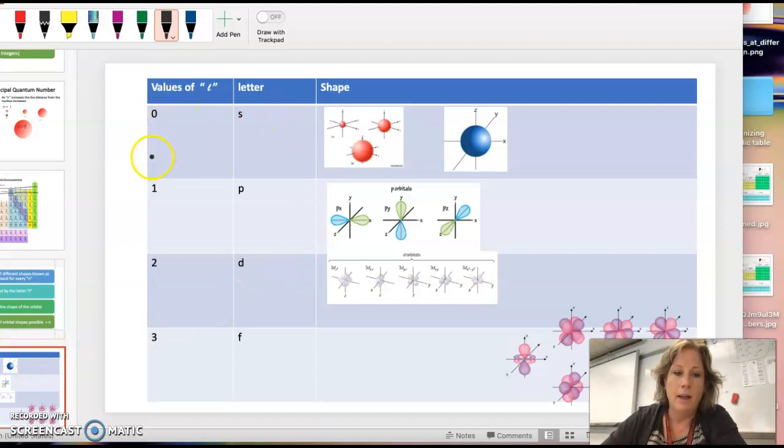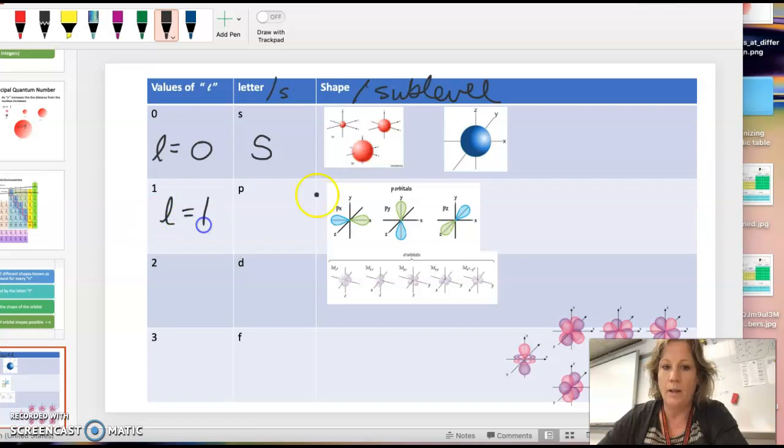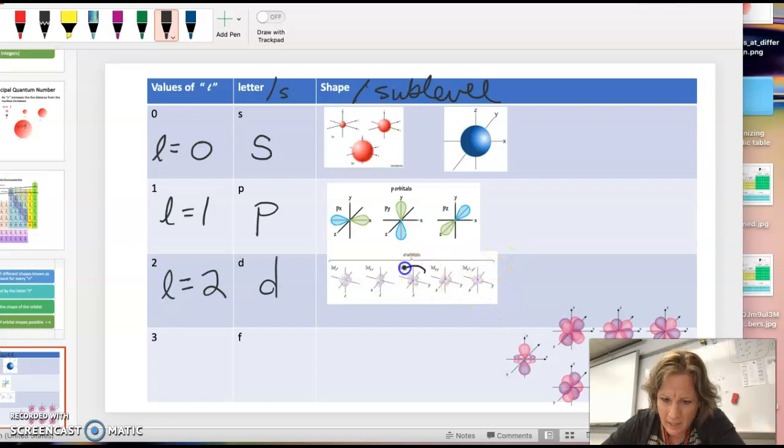If my angular momentum quantum number is 0, then I'm talking about an S sublevel or shape. That would be spherical around the XYZ axis. If L equals 1, then I'm talking about the letter P, which is this kind of dumbbell shape. And it goes XY and Z, and they overlap. If the angular momentum quantum number is 2, then I'm talking about the D shape. And the D shapes are kind of clover-like in the XYZ with four lobes. But there's also this other one, I like to call this one dual pacifier, and I'll show you that one later.